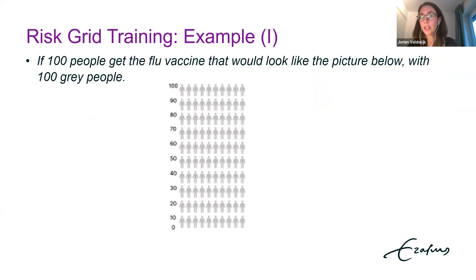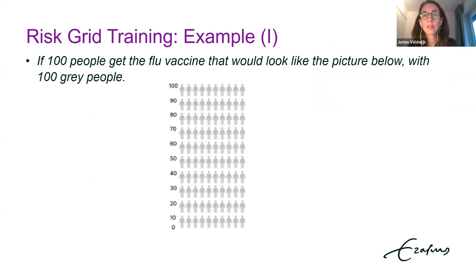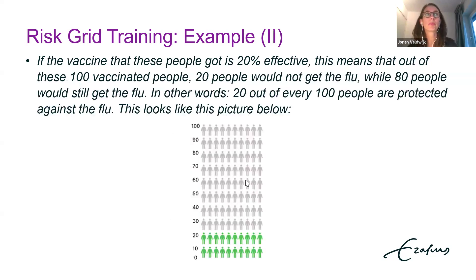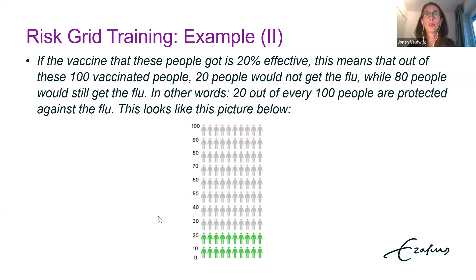When presenting risks, researchers often use some type of risk grid or graphic, which can be very helpful and is usually advised. But it's important to also explain those graphics to respondents. In a recent study on flu vaccination, we included icon arrays and a description: 'If 100 people get the flu vaccine, that would look like the picture below with 100 grey people. If the vaccine is 20% effective, out of these 100 vaccinated people, 20 would not get the flu while 80 people would still get the flu — 20 out of every 100 people are protected against the flu.'